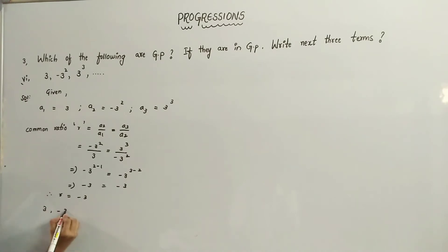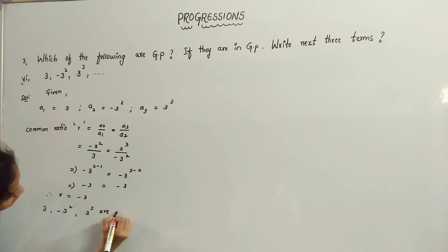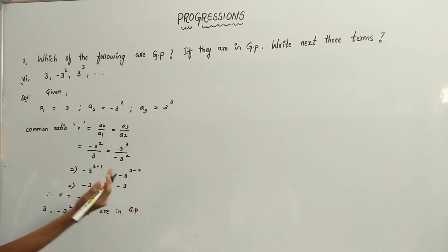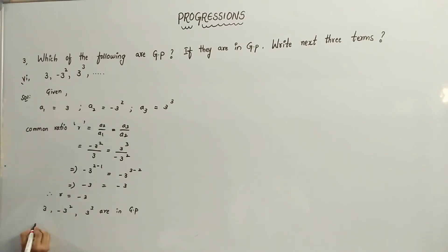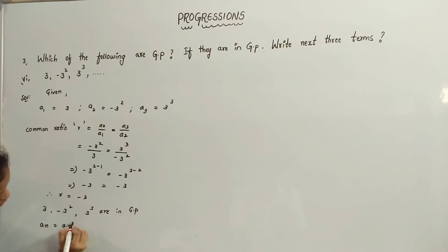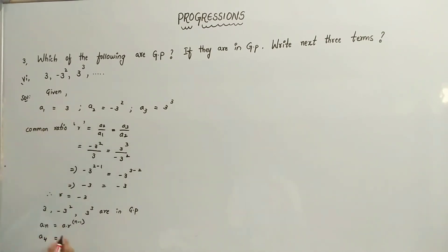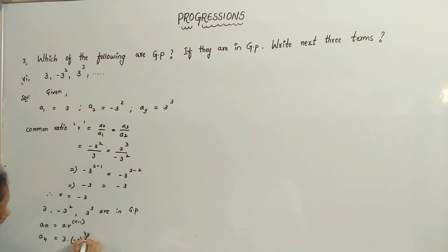So 3, minus 3 squared, 3 cubed are in GP, with R equals minus 3. We have to find the next three terms: A4, A5, and A6. The general form of GP is An equals A into R to the power n minus 1. So A4 equals A is 3, into R is minus 3, to the power 4 minus 1.